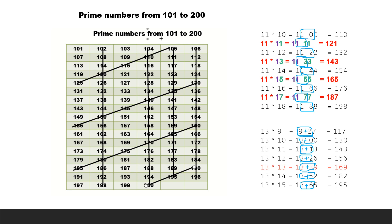Next, cross out multiples of 7. Multiples of 7 start from 105, which is already crossed out. The next is 112, also crossed out. Then 119 — cross that out. Continuing: 119, 126, 133, 140, 147, 154 — these appear diagonally, so cross them out. Next: 161, 168, 175, 182, 189, 196. The last 7 multiple is 196. All multiples of 7 are now crossed out.